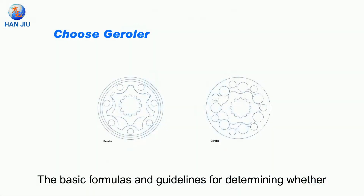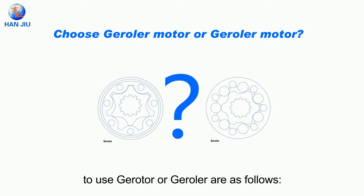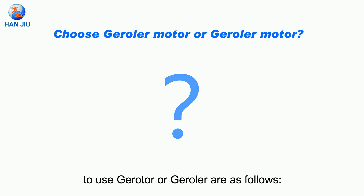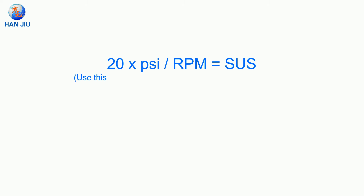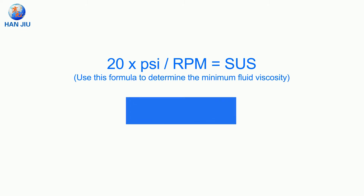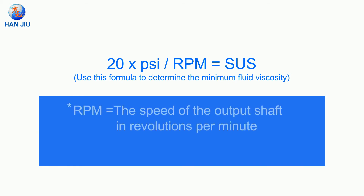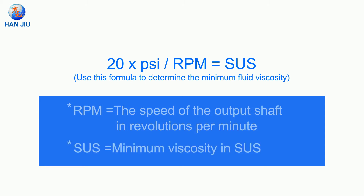The basic formulas and guidelines for determining whether to use a gerotor or geroller are as follows. Use the formula: 20 × PSI ÷ RPM = SUS, to determine the minimum fluid viscosity. RPM is the speed of the output shaft in revolutions per minute, and SUS is the minimum viscosity in SUS.